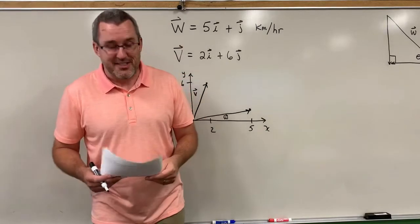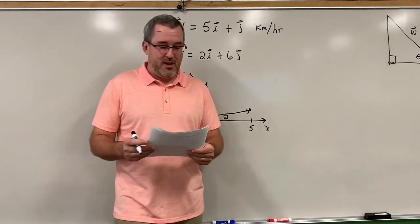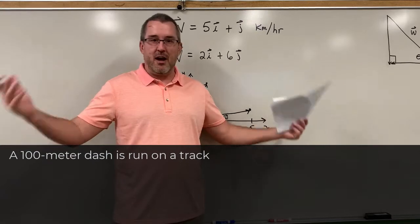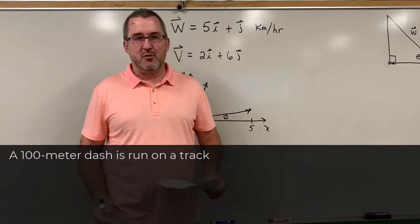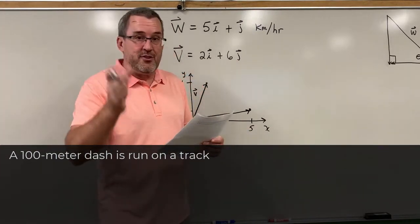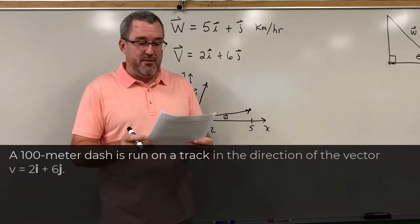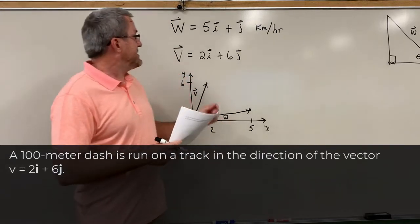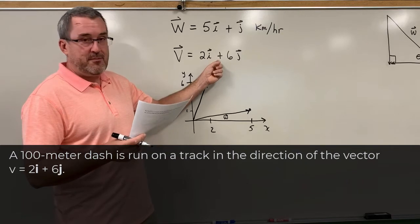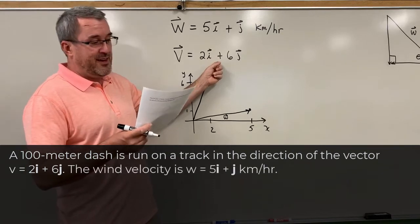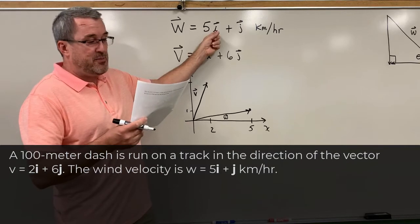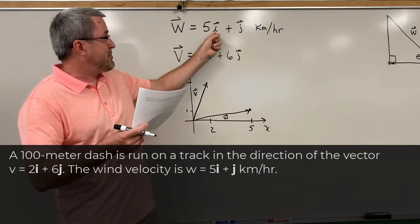The real life situation is this. Suppose there was a 100-meter dash at an Olympics or some competition of some sort. The runners are running in the direction of the vector 2i plus 6j. The wind is blowing according to the velocity vector 5i plus 1j kilometers per hour.